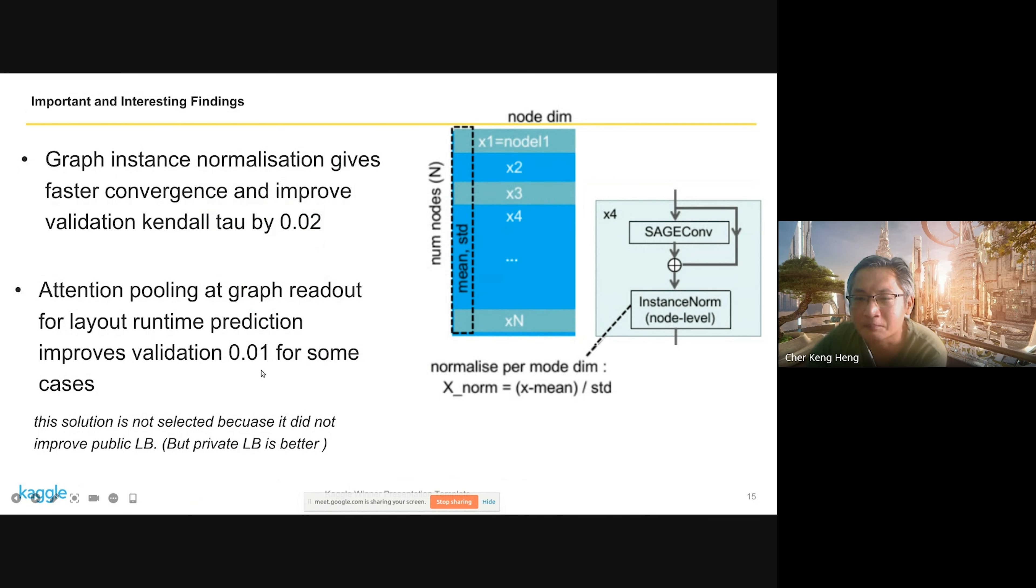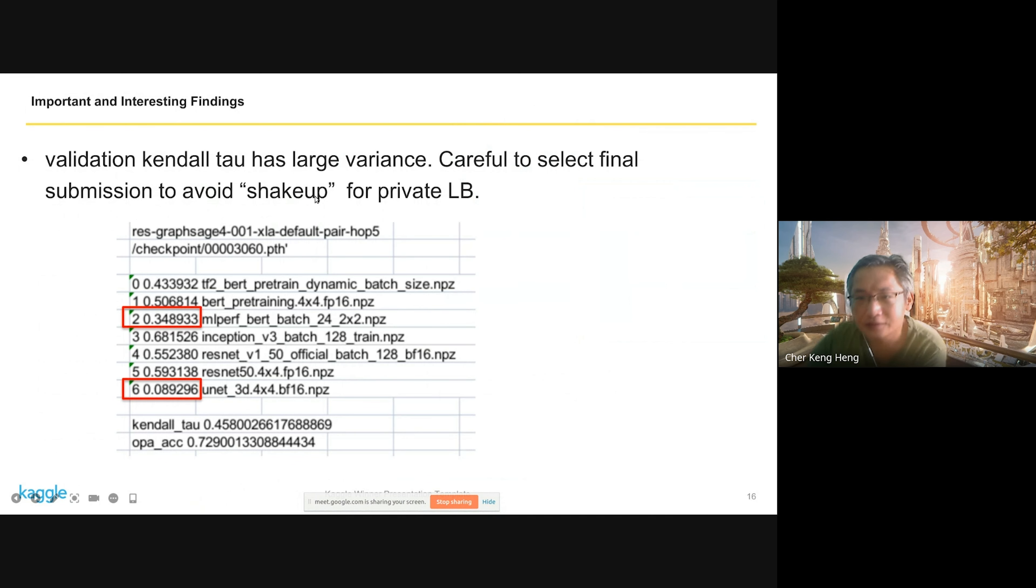For validation, I take a look at the validation per sample. We probably have about seven graphs in a validation set. The results actually fluctuate a lot. You can see this is very low. Looking at this, I think there's going to be shake-up in private and public leaderboard if you just consider the average score. When I make a selection for my final submission, I not only consider the average score but also individual scores. I try to select one that doesn't perform poorly for any of these.